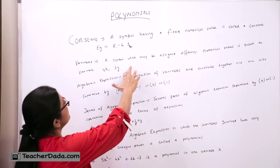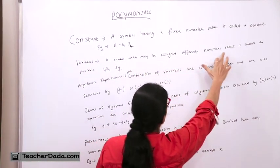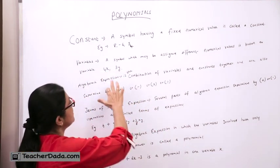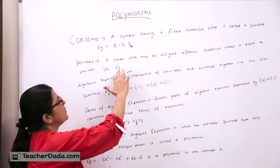The second thing is variable. A symbol which may be assigned different numerical values is known as variable. So for 4X, your variable is X. For 3 times Y, variable is Y.